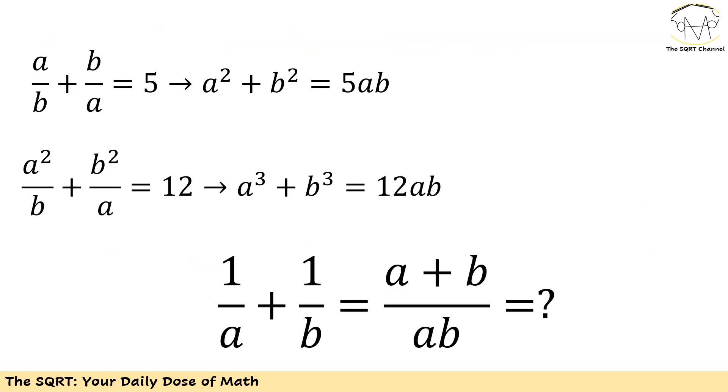To solve this I'm going to start with some algebraic simplification. First, I know that a/b + b/a = 5. I'm going to multiply both sides by ab to have a² + b² = 5ab. For the second equation I'm going to do the same thing and I'll end up with a³ + b³ = 12ab.